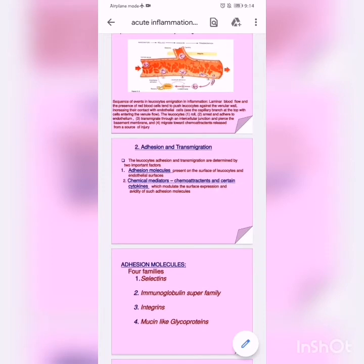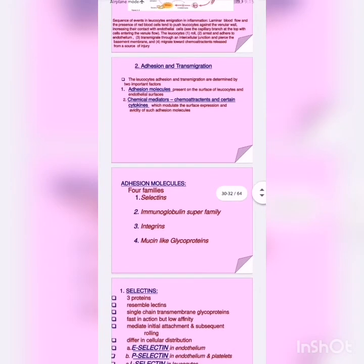After margination and rolling, we have adhesion and transmigration. Adhesion means leukocytes attaching to the endothelium, and transmigration means those leukocytes that have attached to the endothelium will move out into the interstitium. Leukocyte adhesion and transmigration are determined by two important factors: adhesion molecules present on the surface of leukocytes, and certain cytokines which modulate the surface expression and avidity of such adhesion molecules. Types of adhesion molecules: first selectins, second immunoglobulin superfamily, third integrins, and fourth mucin-like glycoproteins.